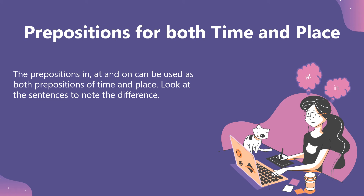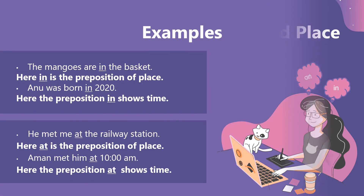Prepositions for both time and place. The mangoes are in the basket — here 'in' is the preposition of place. Anu was born in 2020 — here the preposition 'in' shows time. He met me at the railway station — here 'at' is the preposition of place. Aman met him at 10 am — here the preposition 'at' shows time.